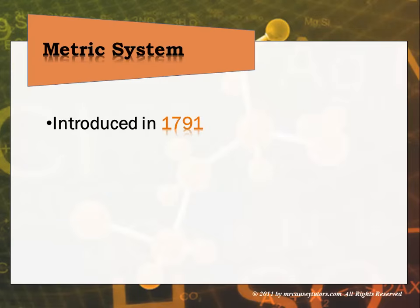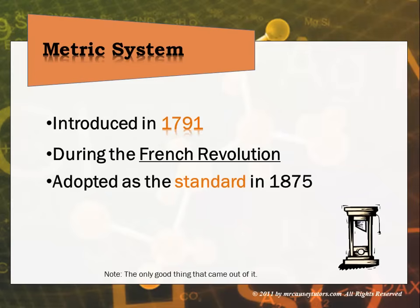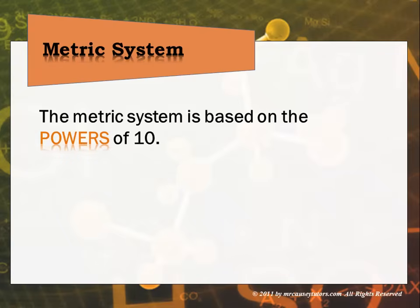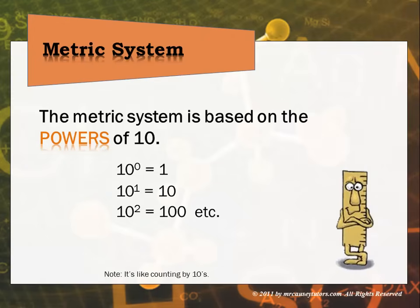Beginning with the metric system, it was introduced in 1791 during the French Revolution — probably the only good thing that came out of the French Revolution. It was not developed originally as a scientific tool, but as part of the revolution in trying to get everything to go along with reason. In 1875, it was adopted as a scientific standard, which made sense because of its being based on the powers of 10. Being based on powers of 10 made it fit right in with our counting and the way we do numbers — our whole number system is based on powers of 10, which is why we call it the decimal system. The metric system is simply a natural fit for the scientific world.